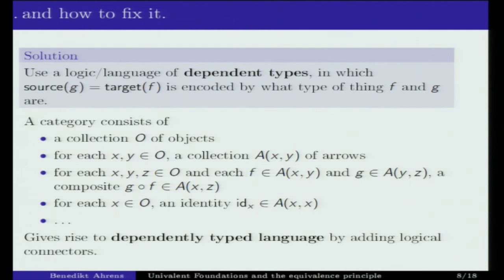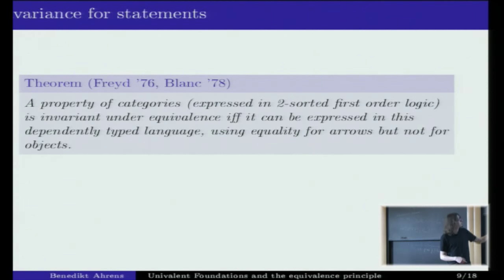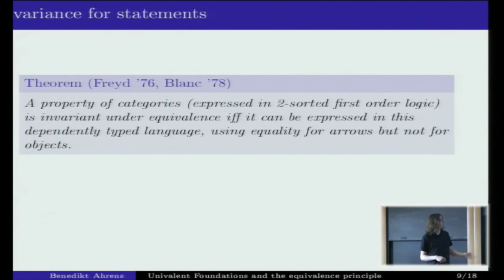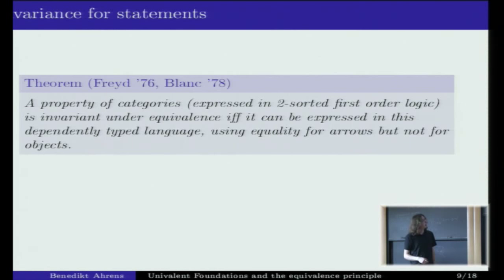This gives rise to a language of dependent types or dependent collections. We can add logical connectives on top of that and get a language for doing category theory where conditions like compatibility are encoded in the typing information. A theorem from the 1970s states that a property of categories is invariant under equivalence if and only if it can be expressed in this dependently typed language using equality for arrows but not for objects.